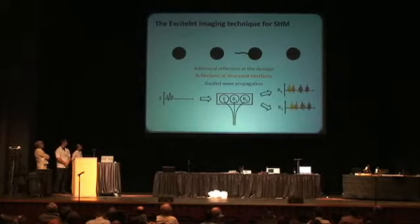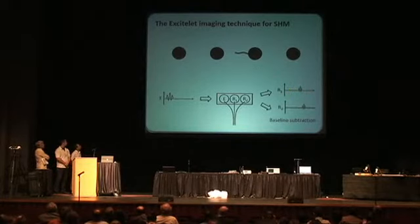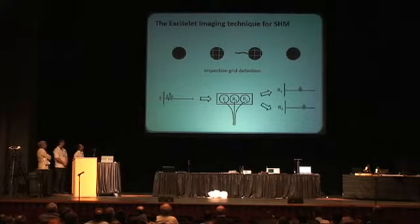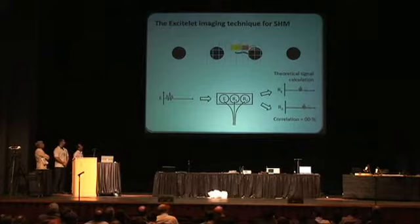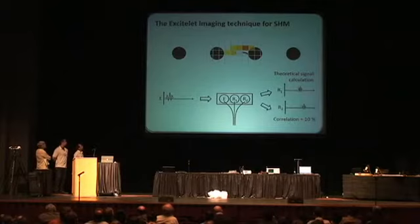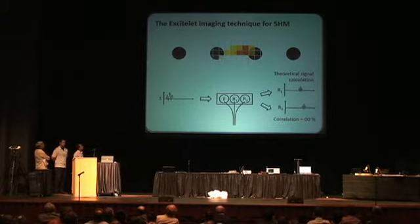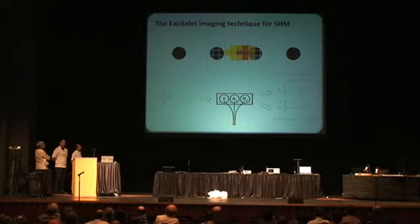We then subtract this signal from the baseline measured previously. To get the image, we define a grid for the inspection, and for each point on this grid, we calculate the theoretical signal corresponding to a given propagation path. We then correlate the measured signal for this path to the theoretical signal, and we get the image.